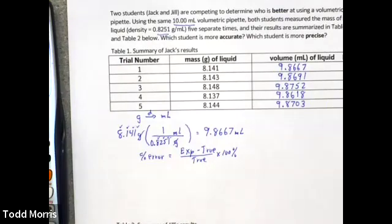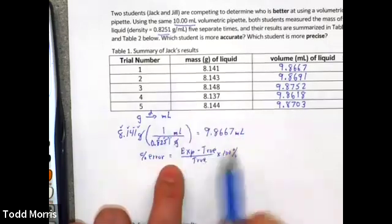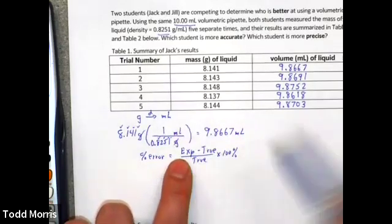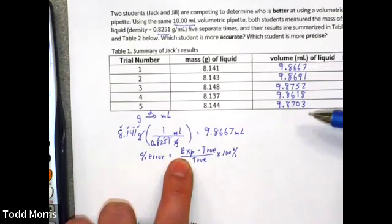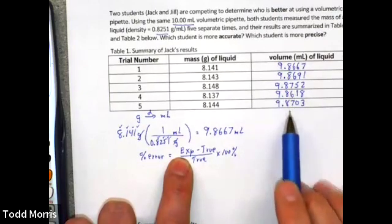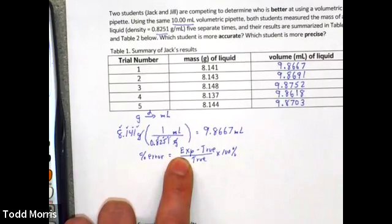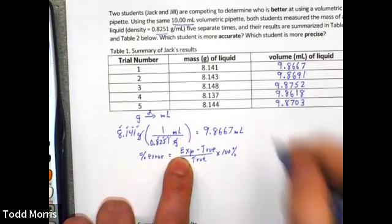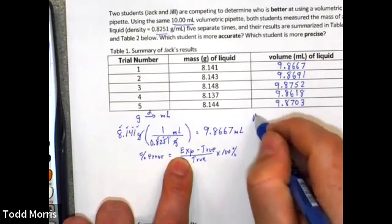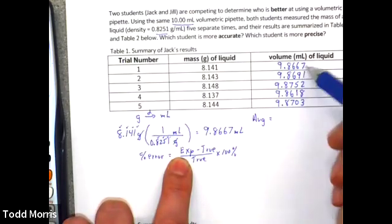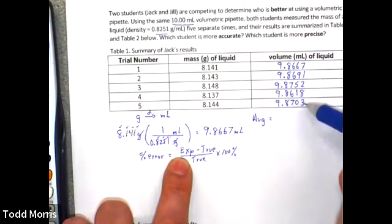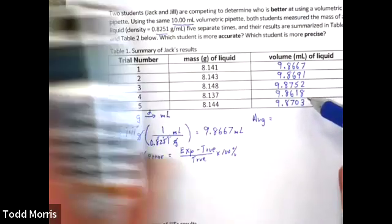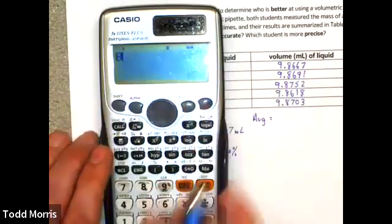For experimental value, we could use any of the individual data points, but normally this class, when we take multiple measurements, repeated measurements of the same thing over and over again, usually our best value is going to be the average, which is what we'll do here. So, I'll find the average of my five volumes by simply adding up the five individual values and then dividing that by the number of observations, which is also five.